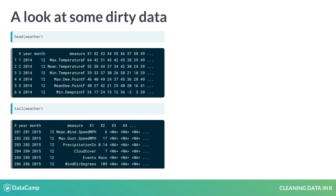For starters, the first column, X, all the way on the left, appears to be meaningless. It's not clear what the columns X1, X2, and so forth represent, and if they represent days of the month, then we've got time represented in both rows and columns. The different types of measurements contained in the measure column should probably each have their own column. There are a bunch of NAs at the bottom of the data, and the list goes on.